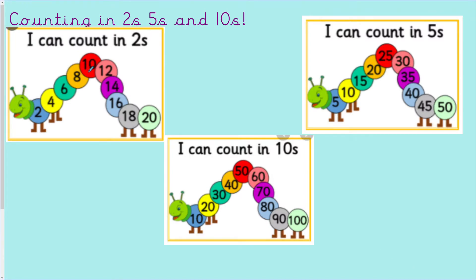Let's do our counting in twos, fives, and tens, starting with twos. Two, four, six, eight, ten, twelve, fourteen, sixteen, eighteen, twenty. Counting in fives: five, ten, fifteen, twenty, twenty-five, thirty, thirty-five, forty, forty-five, fifty.